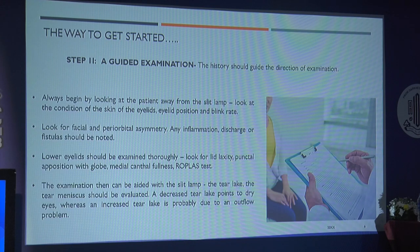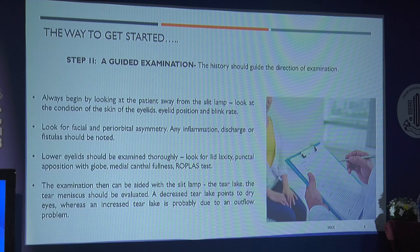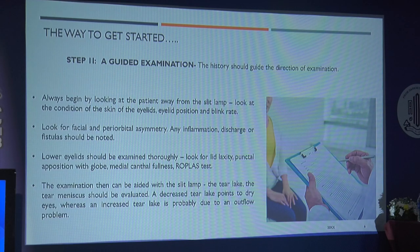Next is the guided examination. After history taking, we proceed with a thorough examination starting from the slit lamp. Before reaching the lacrimal area, you also look at the periorbital and periocular region. You have to look for the condition of the skin of the eyelid, eyelid position, blink rate, facial and periorbital asymmetry, and any inflammation, discharge, or fistulas.